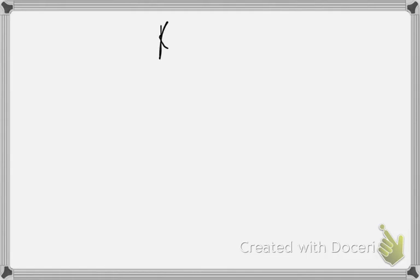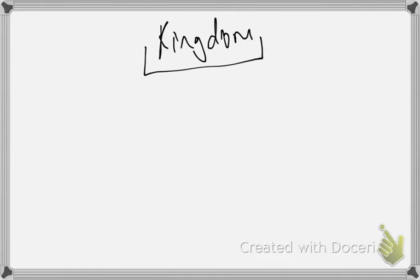The cat is obviously an animal — it's not a fungus. The kingdom is like one large section, and then you can divide kingdoms into six different kingdoms: animals, plants, fungus, protist, bacteria, and archaeabacteria.